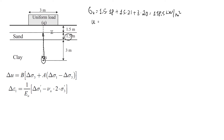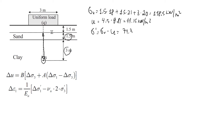The pore pressure is 4.5 meters times the unit weight of water, which gives approximately 44.15 kN/m². The effective stress is the difference between total stress and pore pressure, giving an effective vertical stress of approximately 74.35 kN/m².